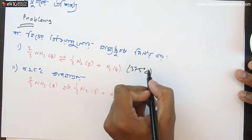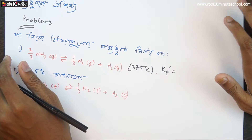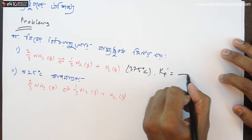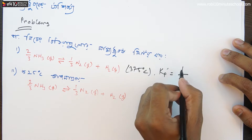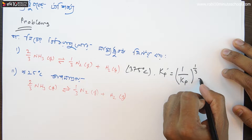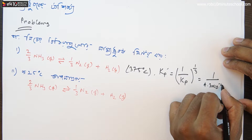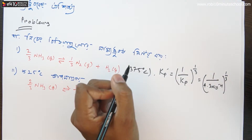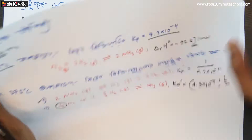We have 1 · Kp' × 3, so 1 by Kp. This is the original degree — Kp — which is 4.3 into 10 to the power of minus 4.